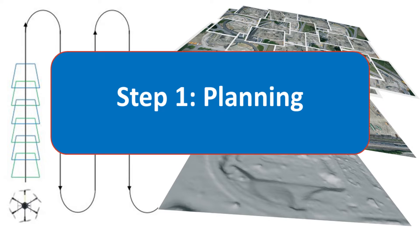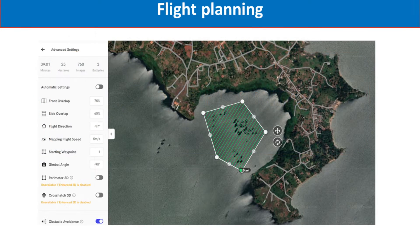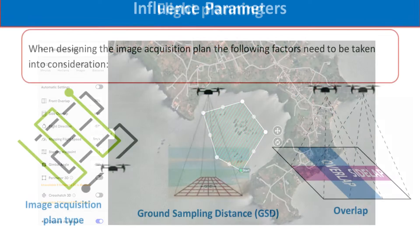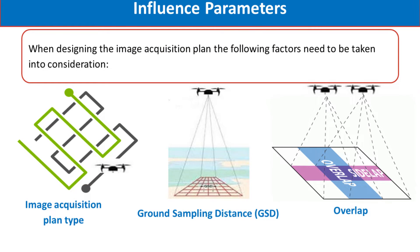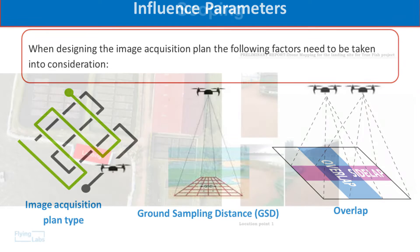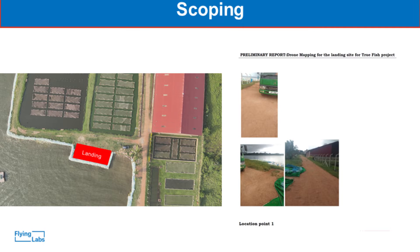When flying a drone mission, there are several key steps to ensure success. Step one is the planning phase, which can be broken into several subsections. Flight planning includes identification of the main purpose for the flight, which helps establish what type of drone and sensors are needed for the mission. This will also identify the area to be captured and can help determine the image acquisition plan type, the ground sampling distance, and the overlap needed to capture images.